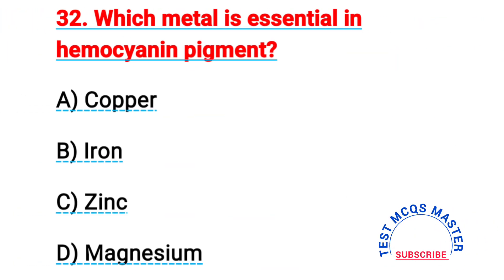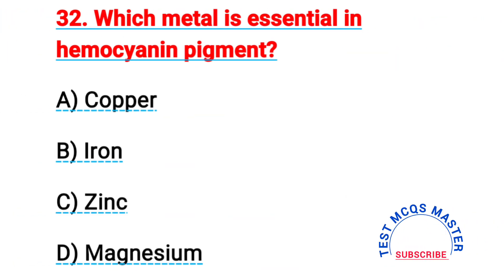Question number thirty-two: which metal is essential in hemocyanin pigment? The right answer is A, copper.